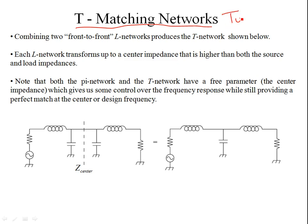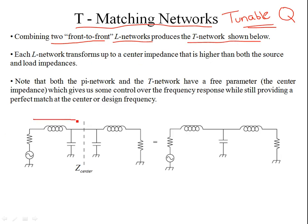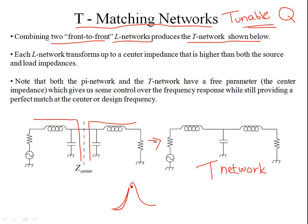These are tunable Q networks — that is, you can tune the quality of the match or the bandwidth of the match by simply changing the free parameter, which happens to be the center impedance. So these are tunable Q networks, meaning you can vary the frequency response as you desire.